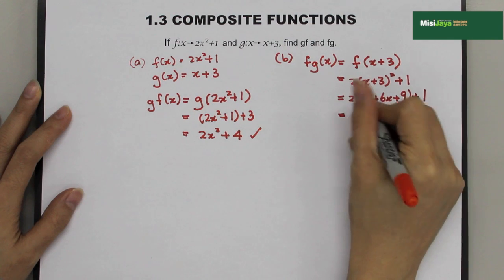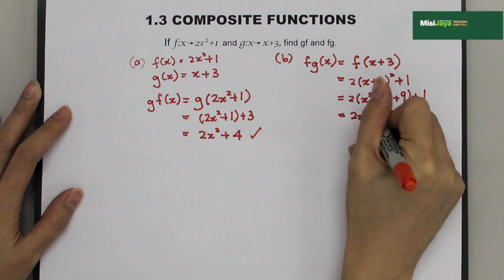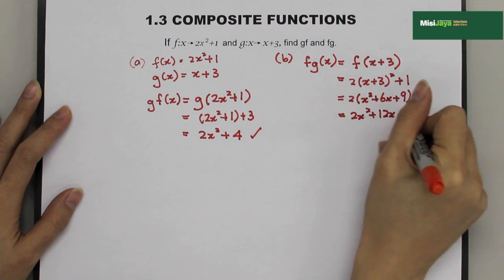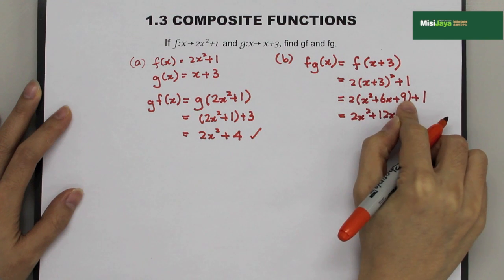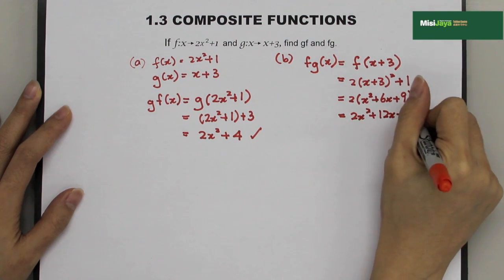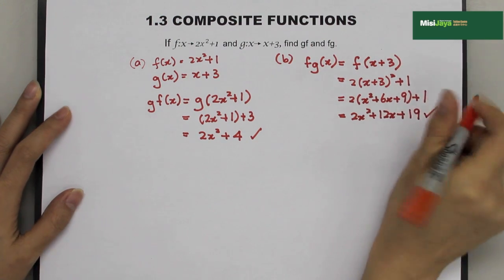Then, equals to... Then, I expand the bracket. 2x² + 12x + 18 + 1 = 19. So, this is my final answer: 2x² + 12x + 19.